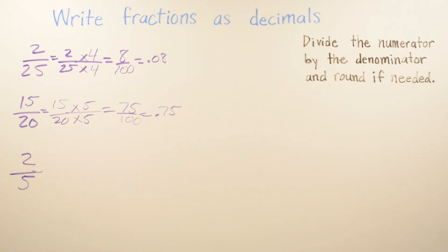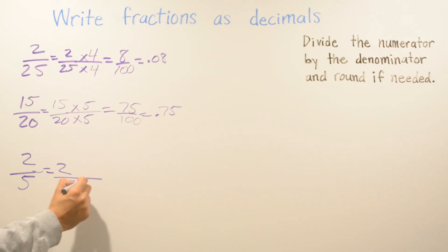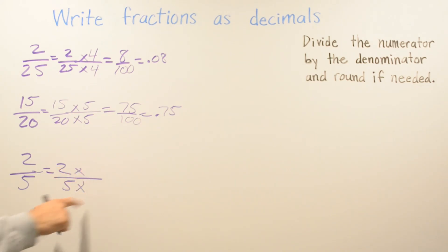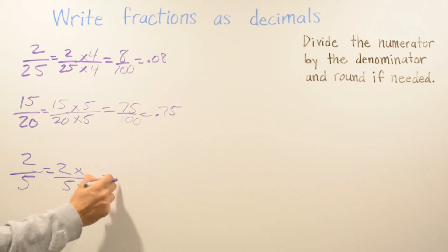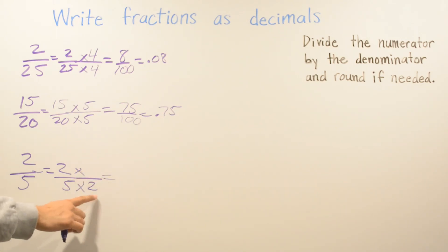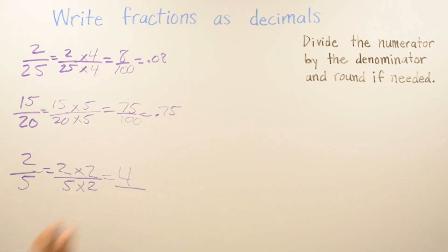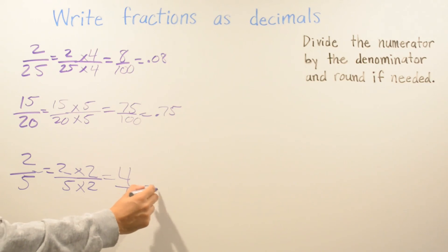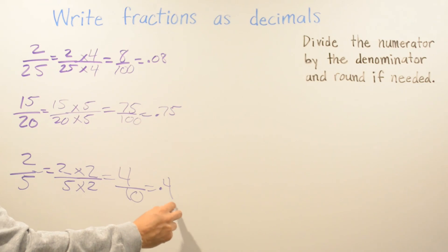For the last problem, two over five, I'll use base-ten fractions. I need to find what to multiply five by to get ten — that's five times two. Whatever you do on the bottom you do on the top: two times two is four and five times two is ten. So the decimal is 0.4, which you can also write as 0.40.